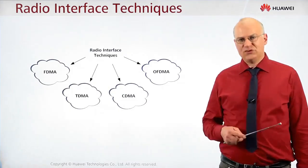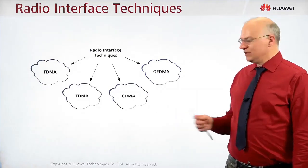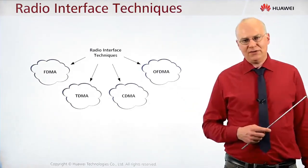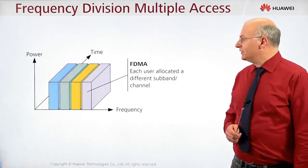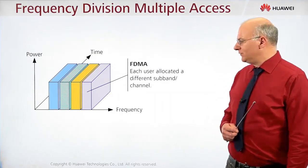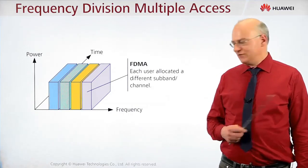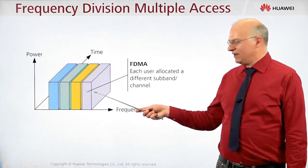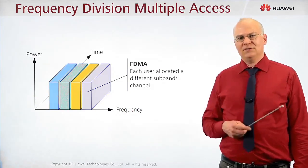TDMA involves division in time, which requires digitalization. The third option is CDMA — Code Division Multiple Access. Finally, we have OFDMA — Orthogonal Frequency Division Multiple Access. In FDMA, different users use different frequency channels or frequency carriers. As shown in this picture, we have capacity for four users on the interface, distinguished by frequency.